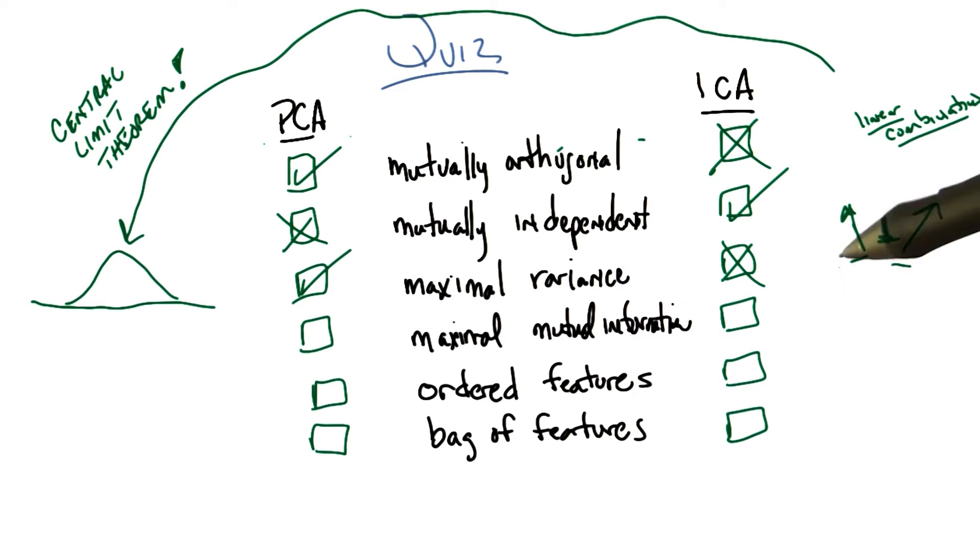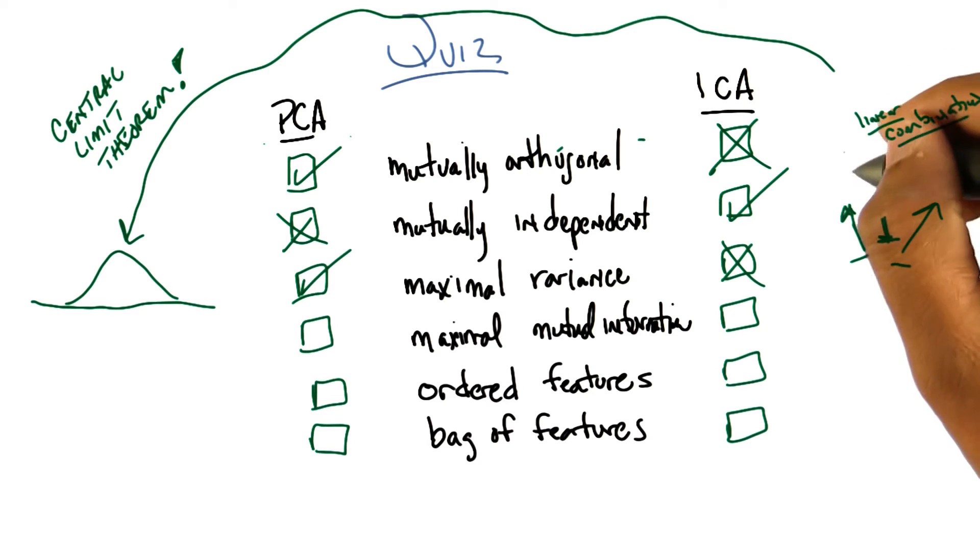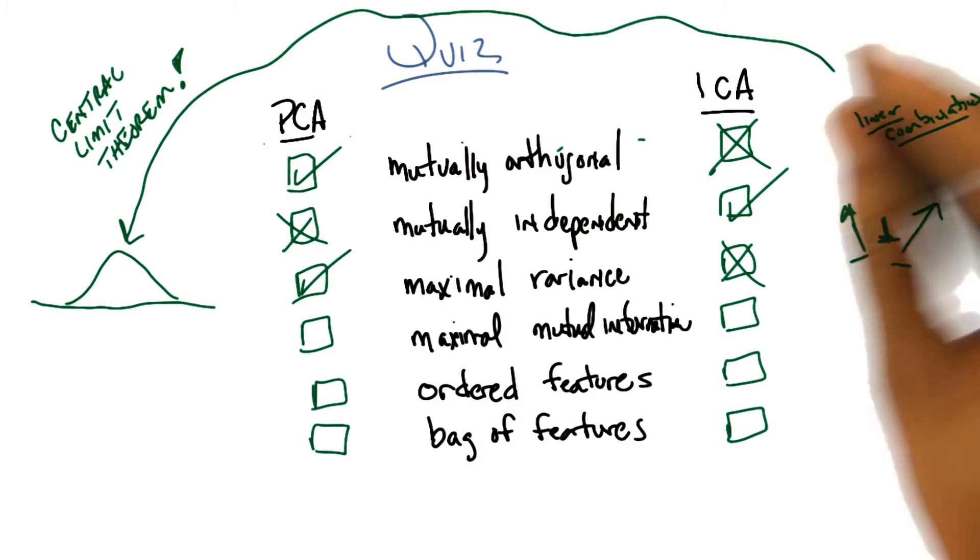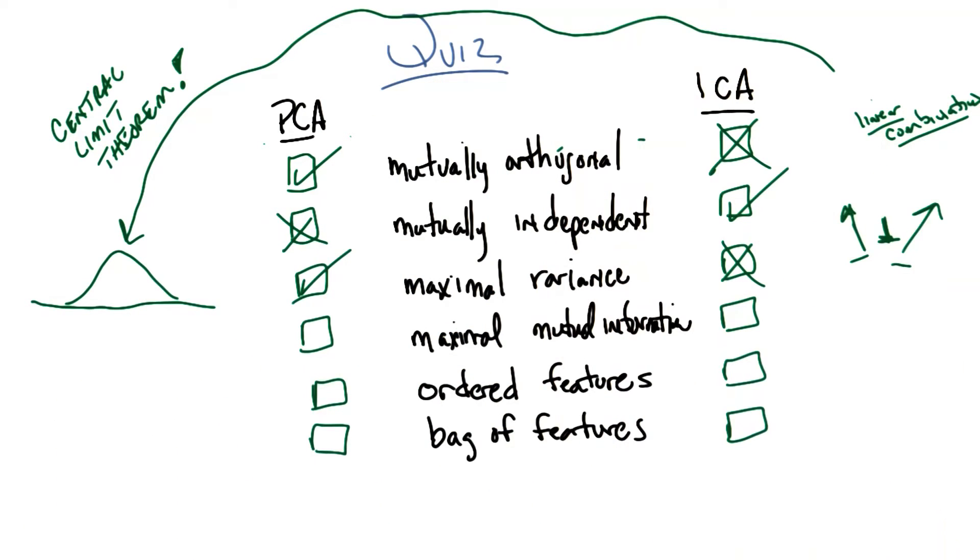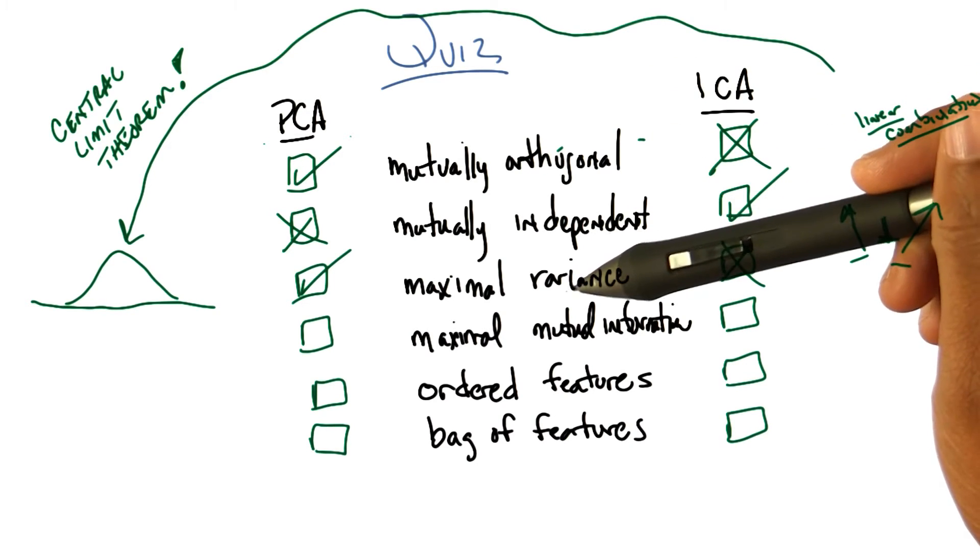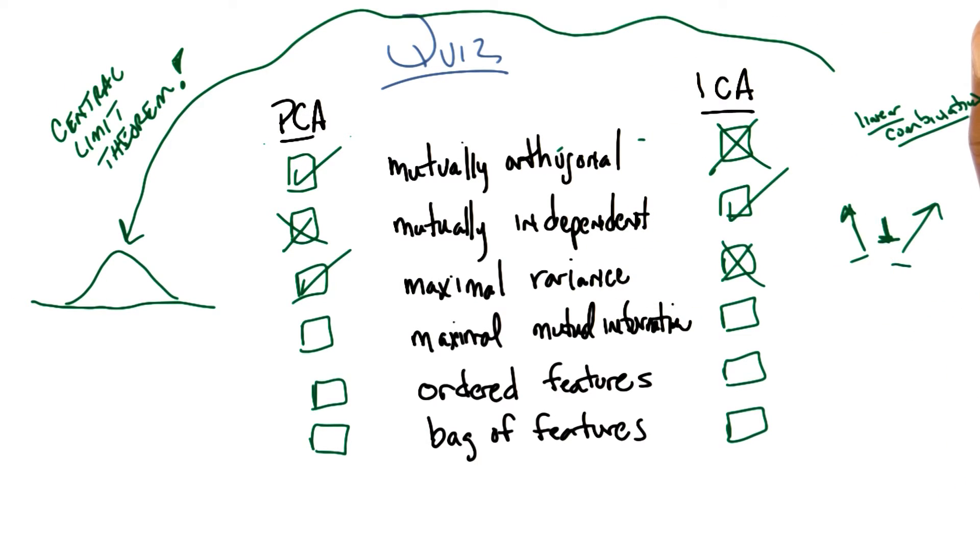Right. Under certain assumptions about the distributions of these individual variables. So another assumption that ICA is making is not just that these variables are independent, but that they're highly non-normally distributed. And if that's the case, then ending up with things that look like Gaussians has got to be exactly the wrong thing to do. If that assumption holds to be true. Okay. What about Maxwell mutual information? My understanding of what you described for ICA said that this is what it's trying to do. It's trying to find a new feature space where the features are maximally, the mutual information between them is as large as possible. So I would check the ICA in that case and not the PCA.